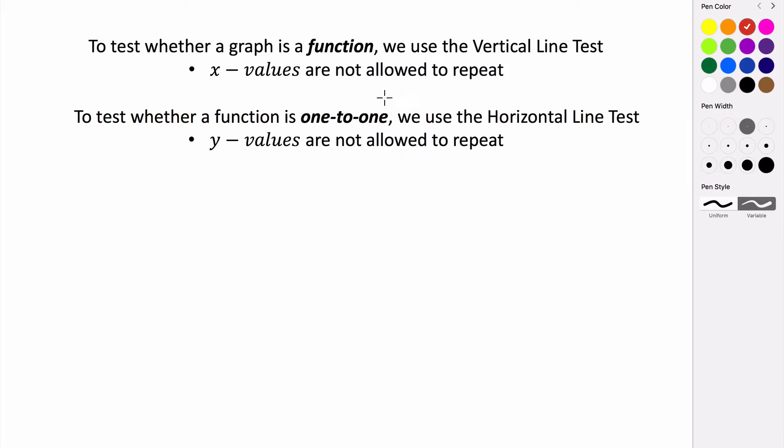So it says that if we take a horizontal line and run it across up and down our function, if it ever intersects our function more than once at any given time, then our function would not be one to one, which would mean that its inverse would not be a function.